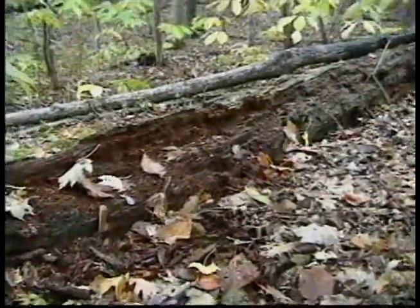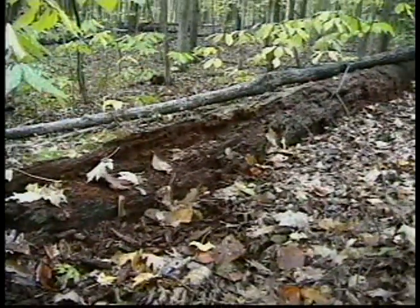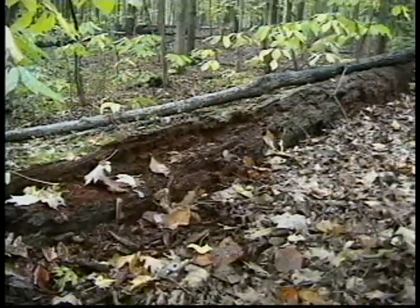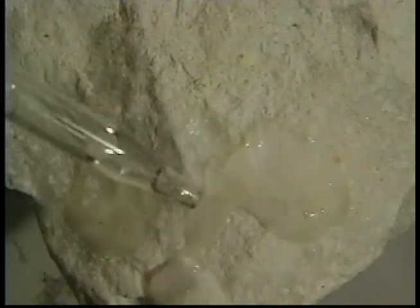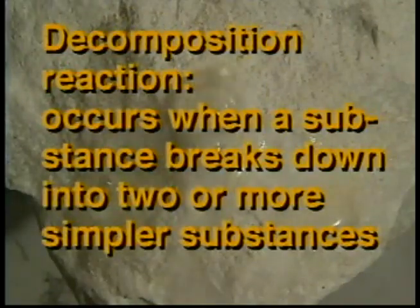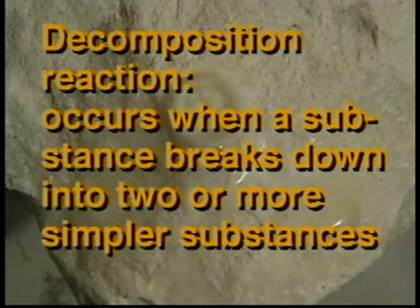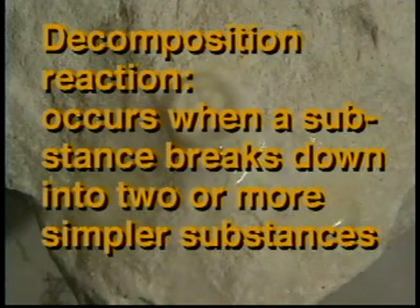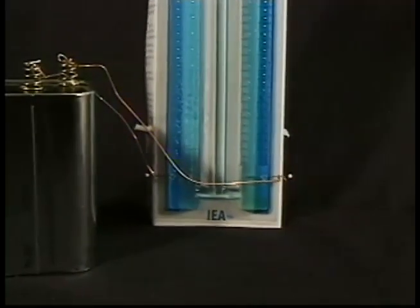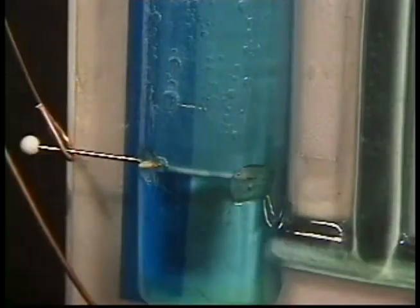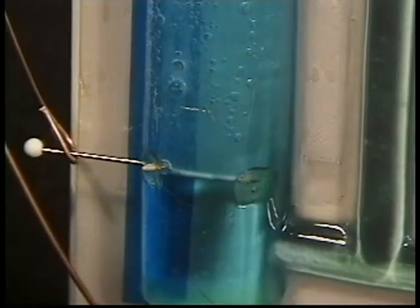This rotting tree log is undergoing decomposition, which is the process of breaking down. This process occurs in many chemical reactions in which a substance is broken into simpler substances. This is called a decomposition reaction. In a decomposition reaction, a substance breaks down into two or more simpler substances — the opposite of a synthesis reaction. When electricity is applied to water, it may undergo a decomposition reaction, producing bubbles of oxygen and hydrogen gas.